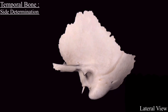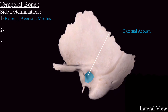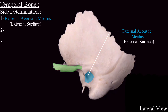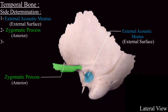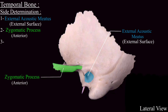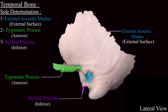Now we come to the side determination of the temporal bone. For side determination you have to remember three main points. First, the external acoustic meatus should be on the external surface. Second, the zygomatic process should be directed anteriorly. Third, the styloid process should be directed downward. So this is the left temporal bone.